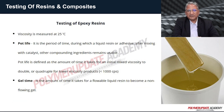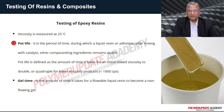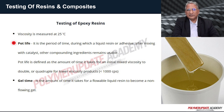For epoxy resin testing, viscosity is evaluated at a definite temperature of 25 degrees centigrade. Pot life is also determined — it is the period of time during which a liquid resin or adhesive, after mixing with catalyst and other compounding ingredients, remains usable. Pot life is defined as the time it takes for the initial mixed viscosity to double or quadruple, especially for lower viscosity products less than 1000 centipoise.